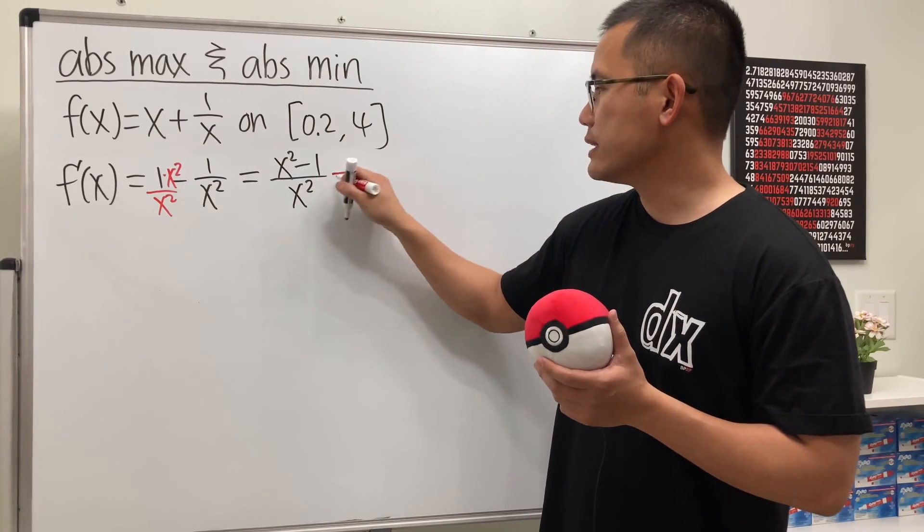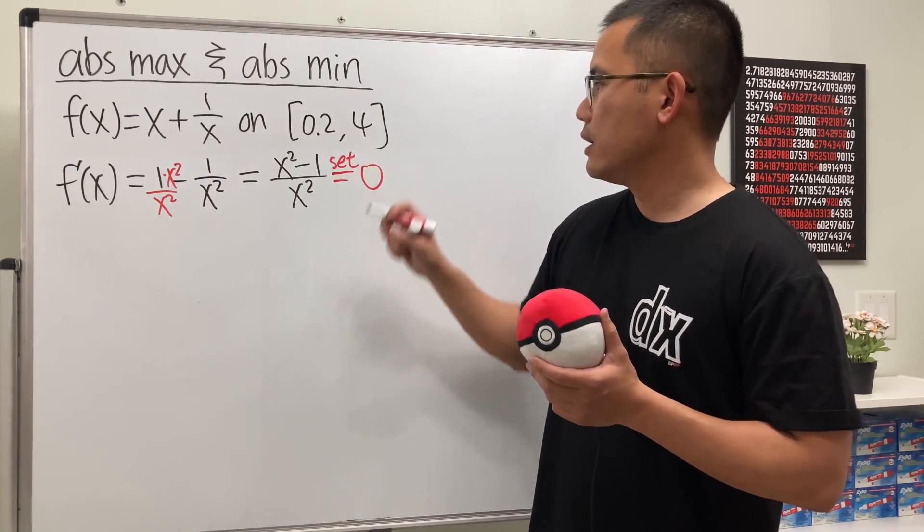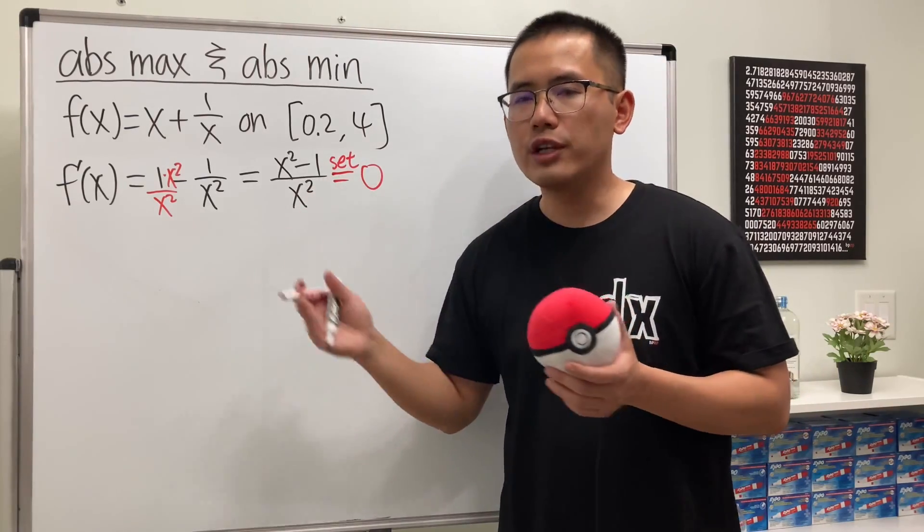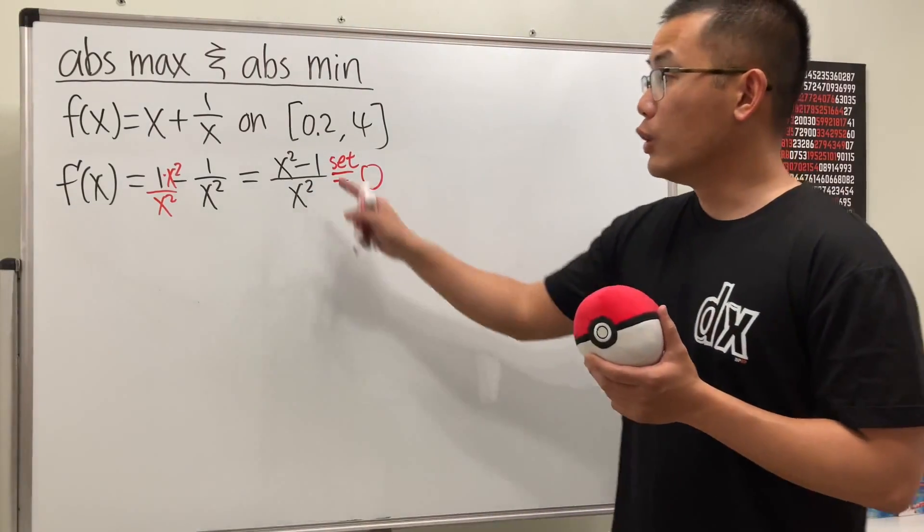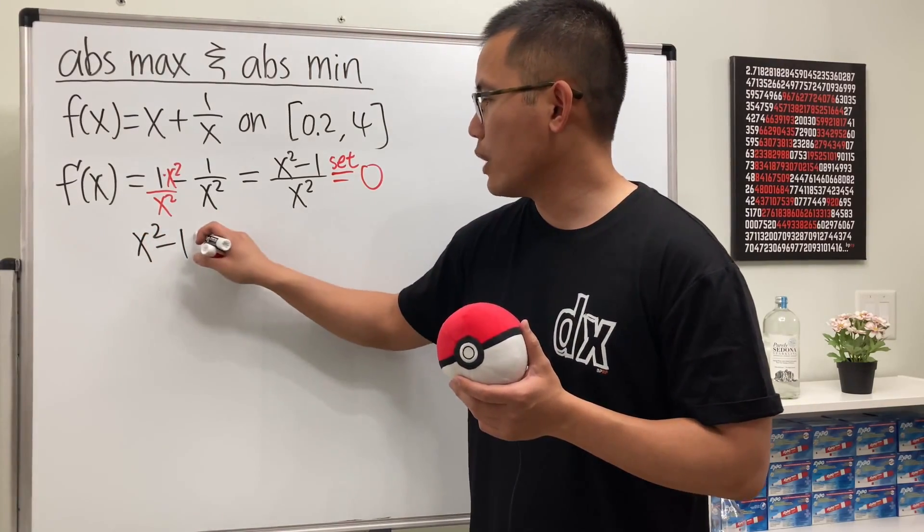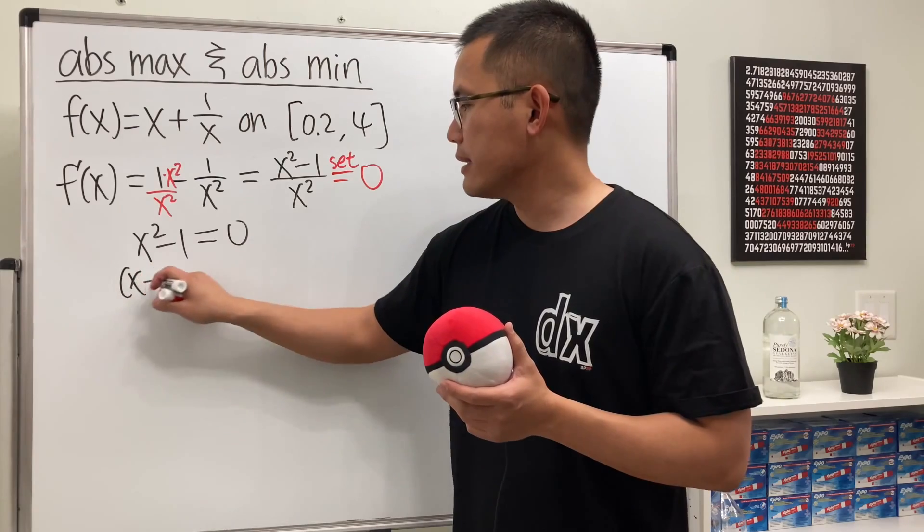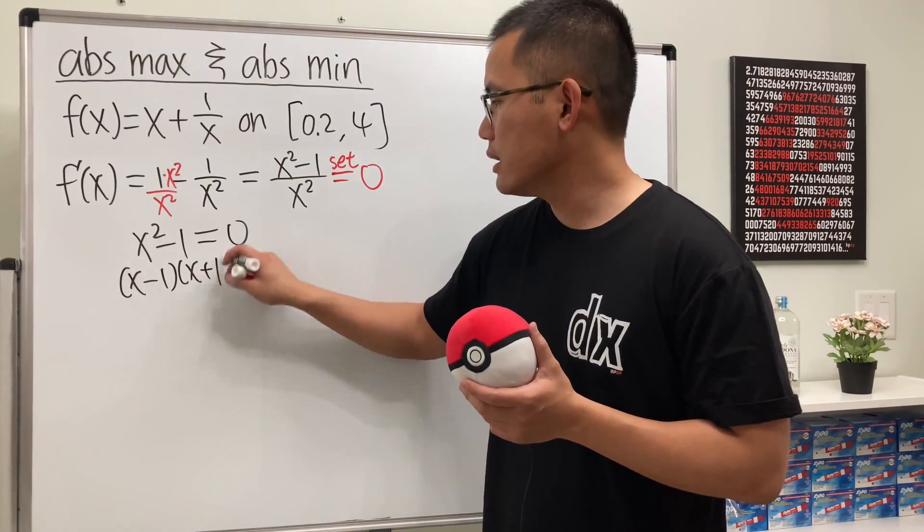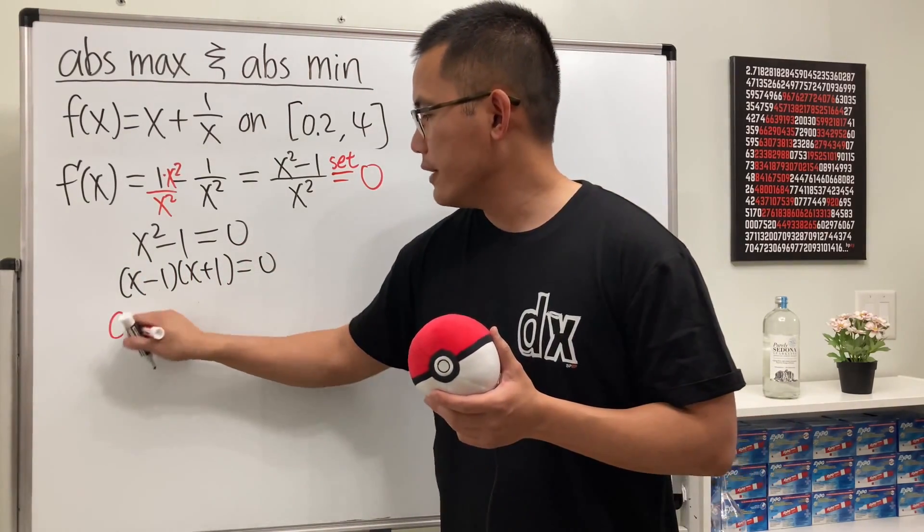Now we set this to be 0. Here we have a fraction. In order for a fraction to be 0, we just need the top to be 0. So we look at x squared minus 1 equals 0. Factor it: x minus 1 times x plus 1 equals 0.